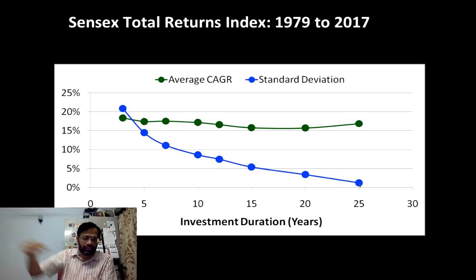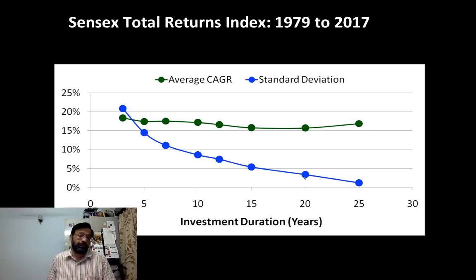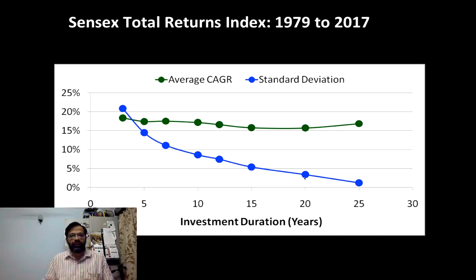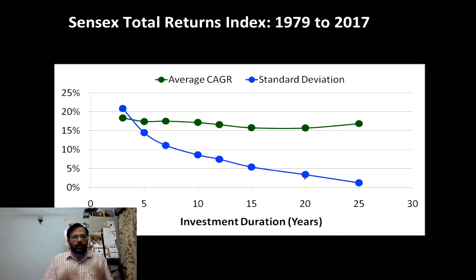Still, there will be a deviation. Please do not assume from this graph that if you invest over 20 years you will get 15% plus or minus 3% or 4%. That's a reasonable assumption, but please note that 1979 to 2017 is still a very short period from the point of view of statistics. But based on what we have, this is it.